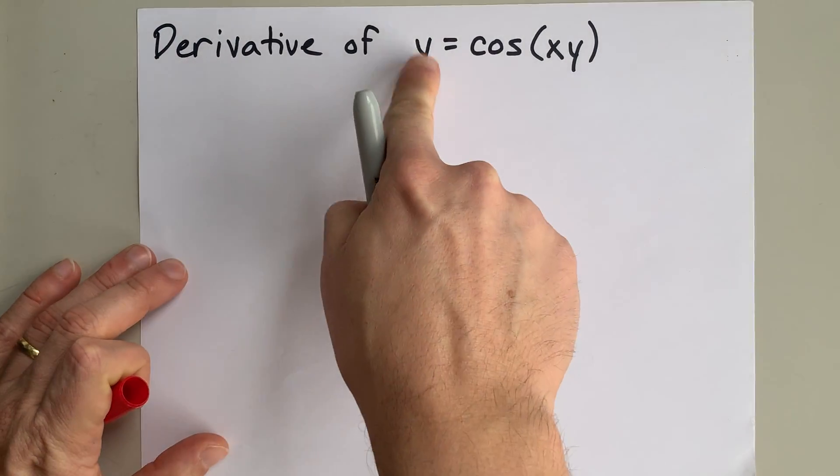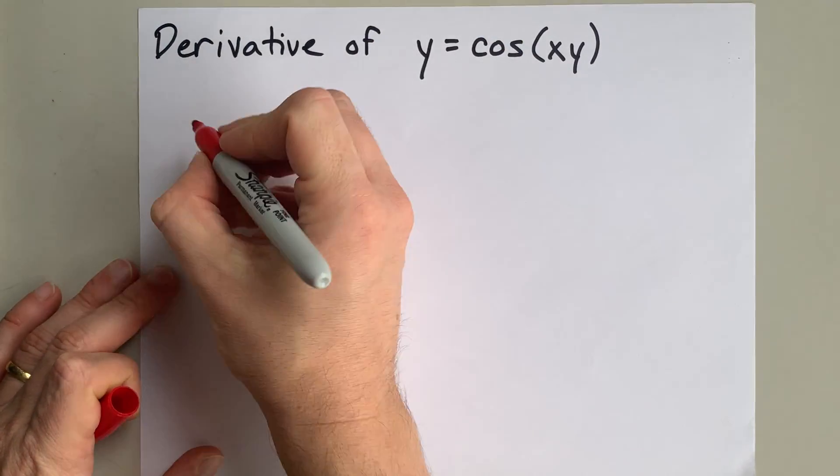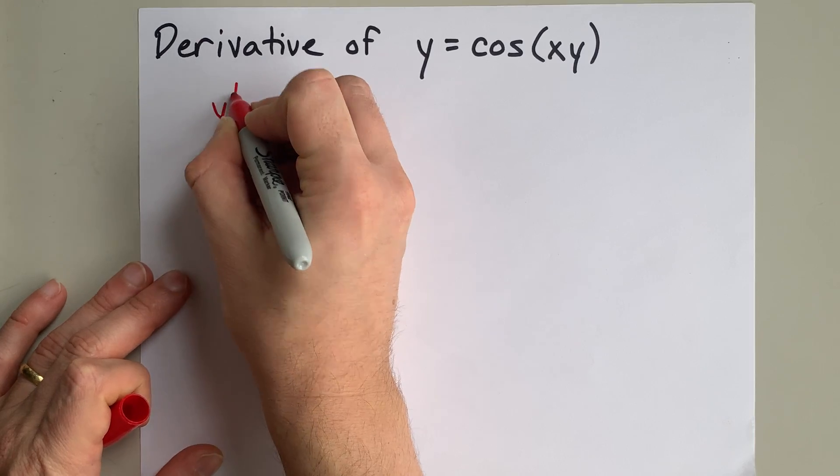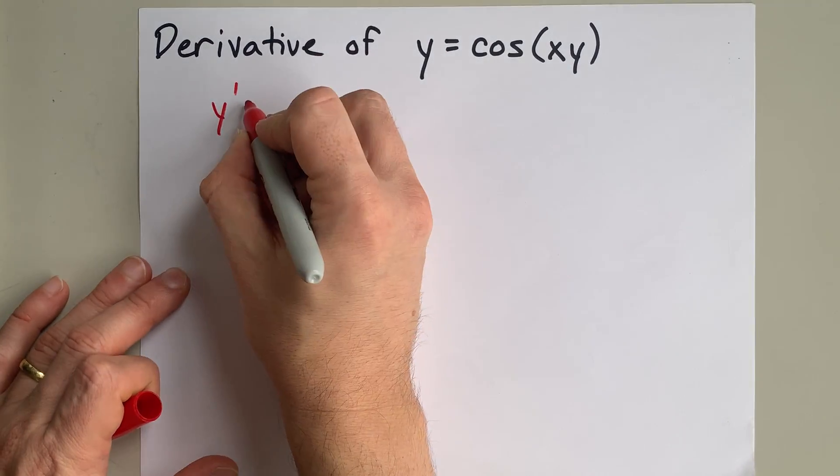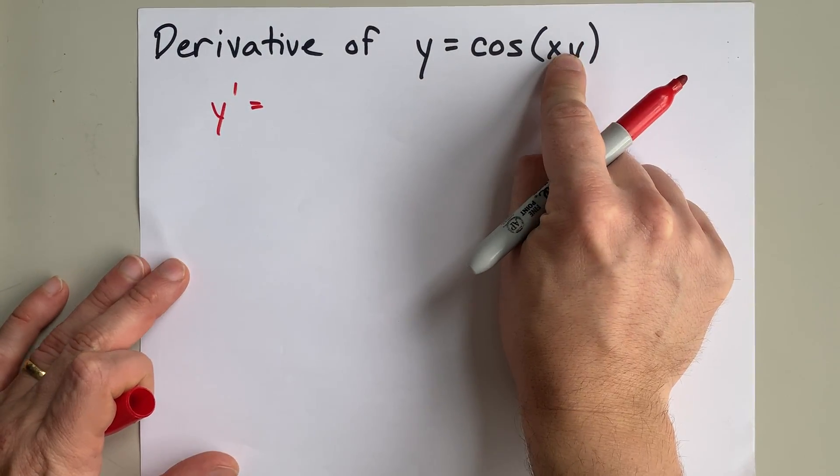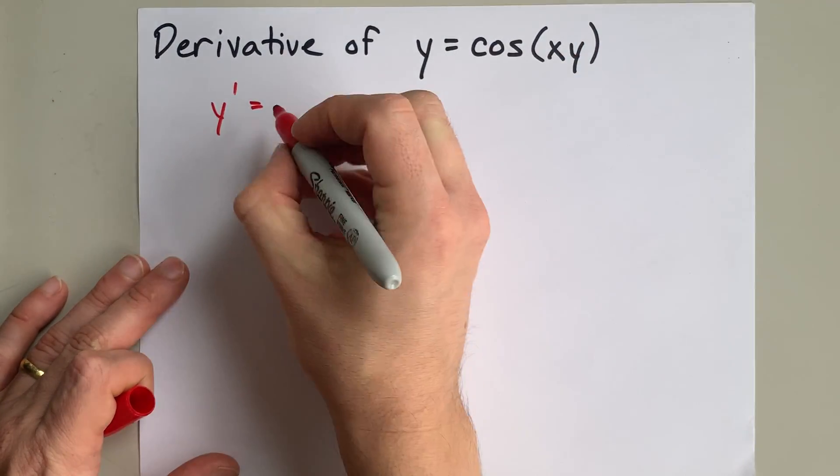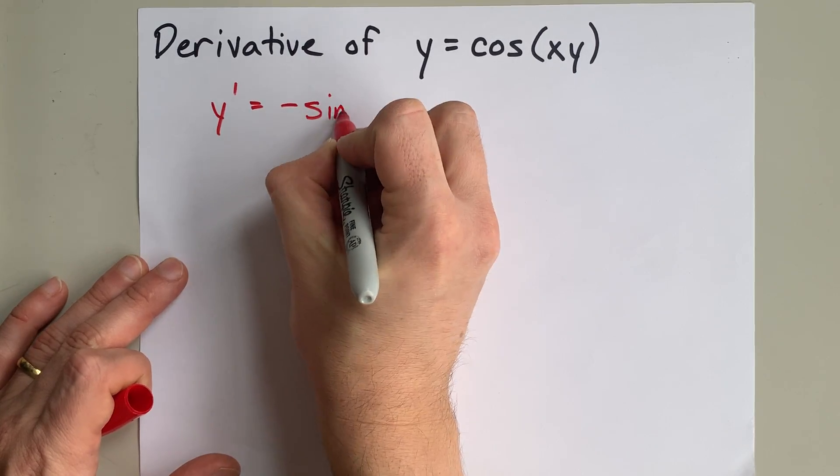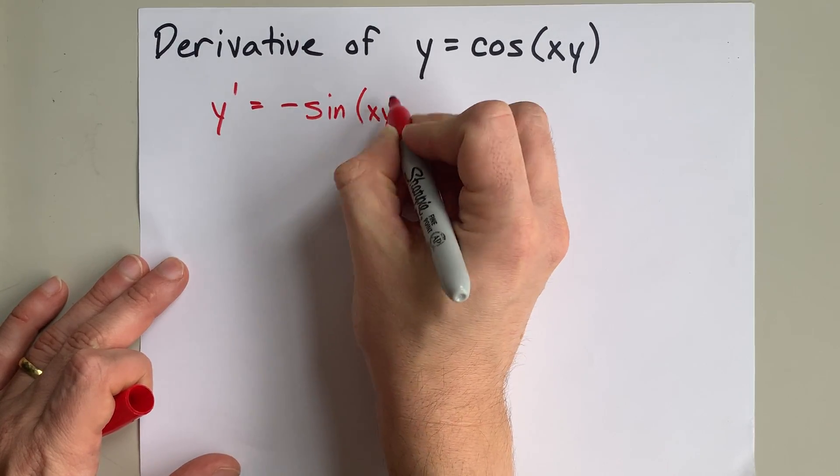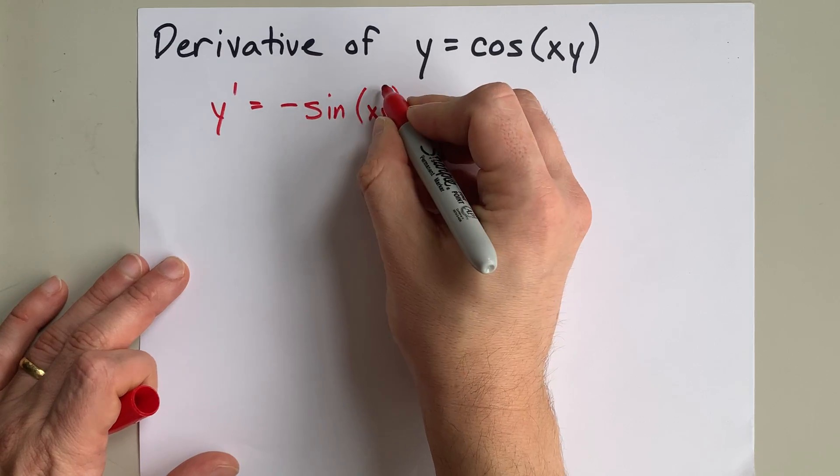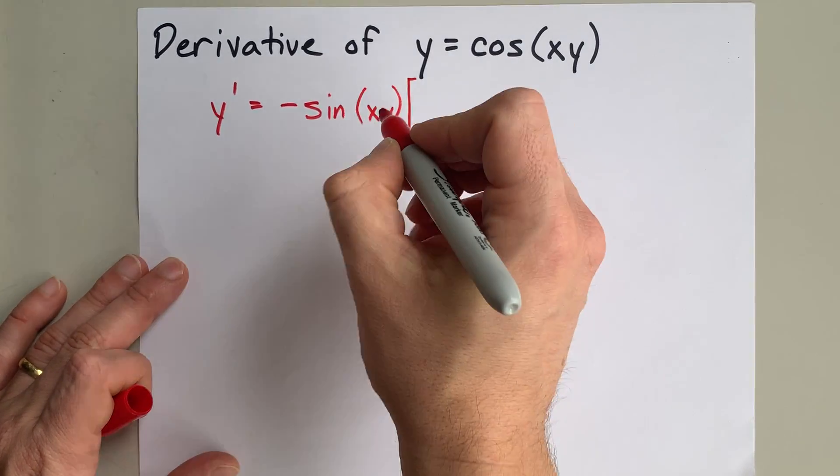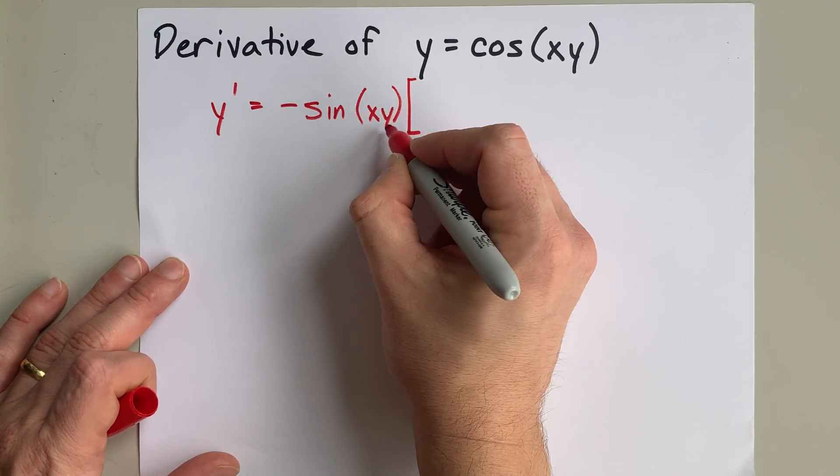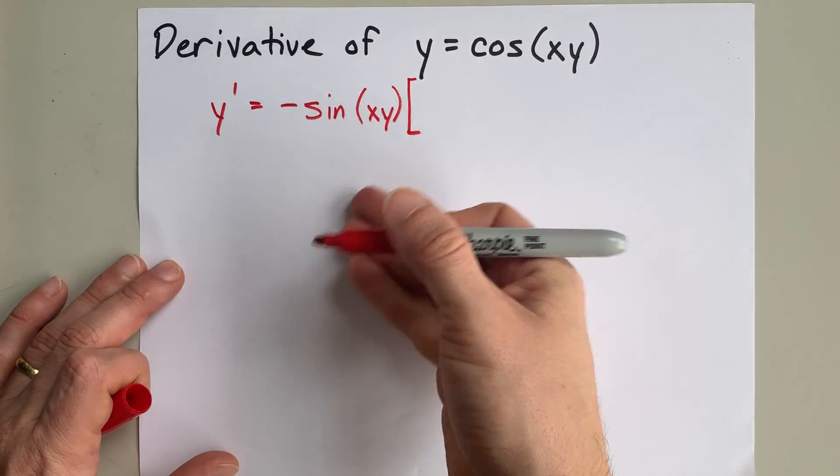The derivative of y is dy by dx. I prefer y prime when I'm doing implicit differentiation. Then I need to take the derivative of cos of something. The derivative of cos anything is negative sine of that same anything. If that anything is not just x, then you also need to multiply it by the derivative of whatever is on the inside of that function. This is chain rule.